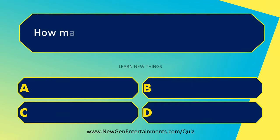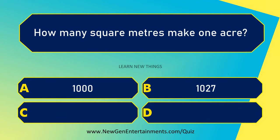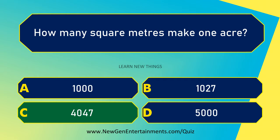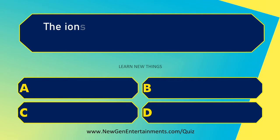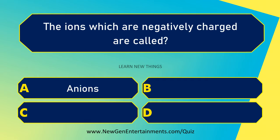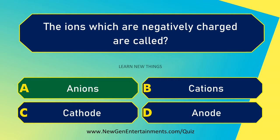How many square meters make one acre? 4047. The ions which are negatively charged are called? Anions.